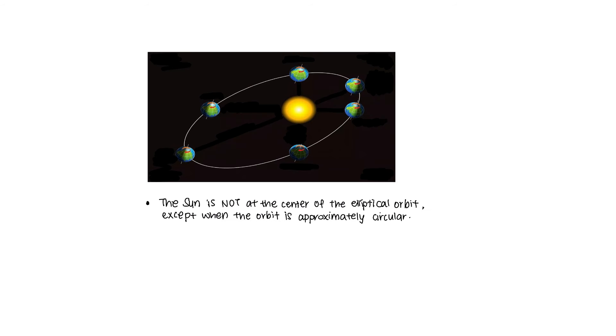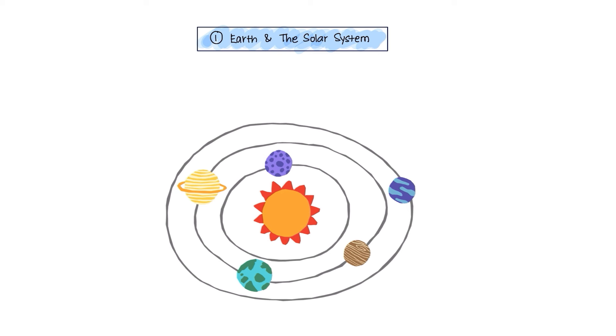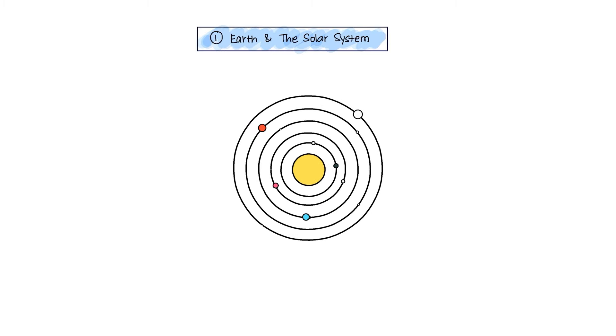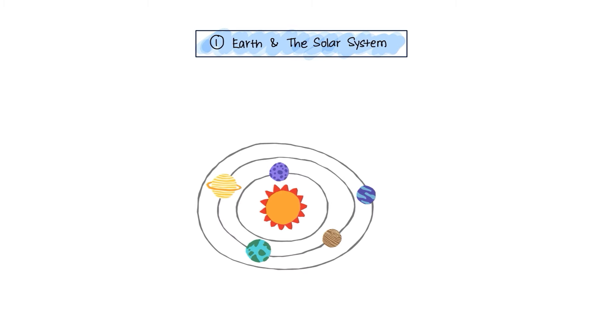A quick reminder: know that the Sun is actually not at the center of the elliptical orbit except when the orbit is approximately circular. Okay, back to gravitational strength. Since the Sun contains most of the mass of the solar system, this explains why the planet orbits around the Sun. This force is called the gravitational attraction of the Sun.